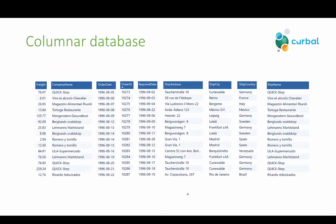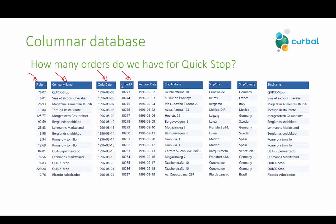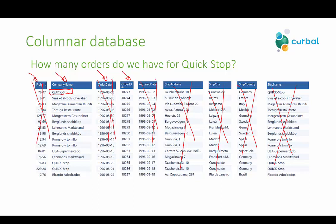Let's do a very quick recap on the columnar database concept — you will have to go through the previous video to fully grasp it. What a columnar database does — VertiPack in this case — is it takes your table and splits it into columns, storing each column in separate files, as you can see here. So if we ask how many orders do we have for Quickstop — Quickstop is a customer, a company name — it will ignore all columns that have nothing to do with our query. It will go through only the columns that apply: company name and order ID. It finds the Quickstop rows and gets the needed rows from order ID. This technique is called column elimination.